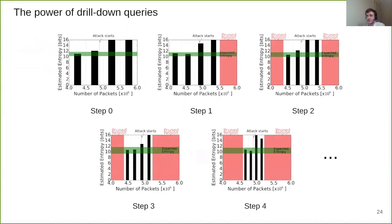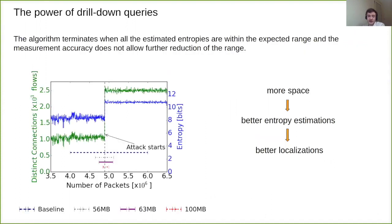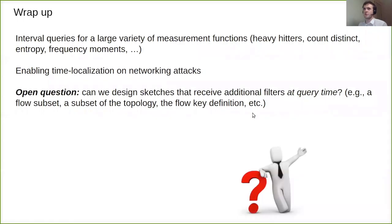By breaking down the remaining time frame into intervals, we observe that the attack starts at the second half and prune the first interval. Step by step, this algorithm terminates when all the estimated entropies are within the expected range and the measurement accuracy does not allow further reduction. With more space, we can get better entropy estimations and better localizations. Here on the graph, you can see comparison of our algorithm in interval query with the baseline approach, which is a sliding window over fixed window size. As you can see, more memory provides better localization of the starting point.